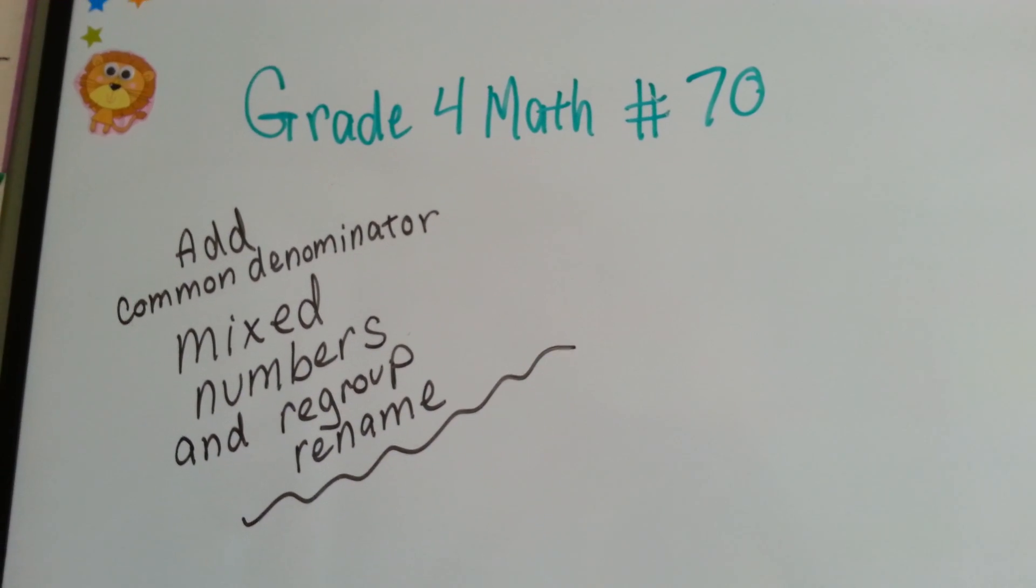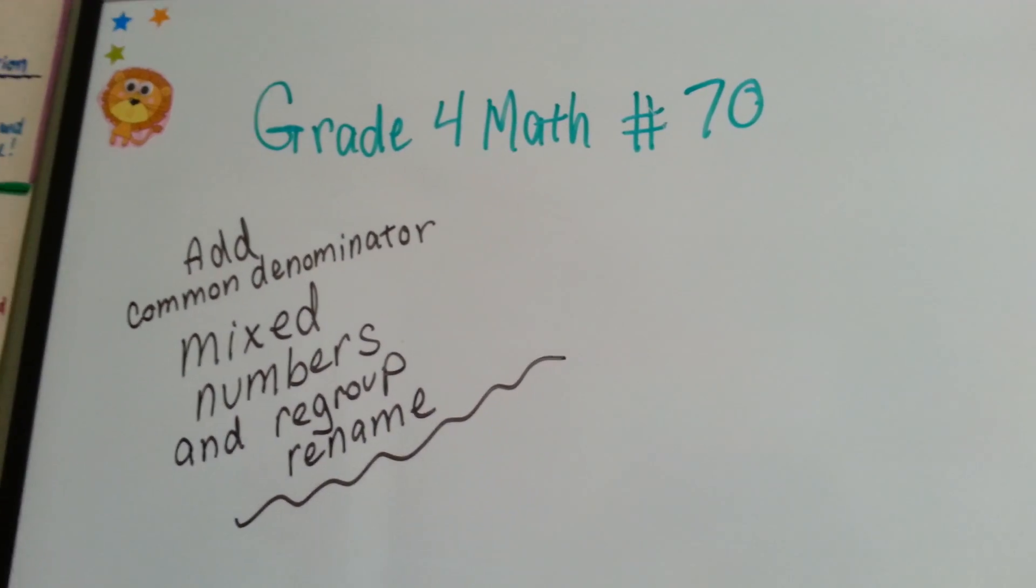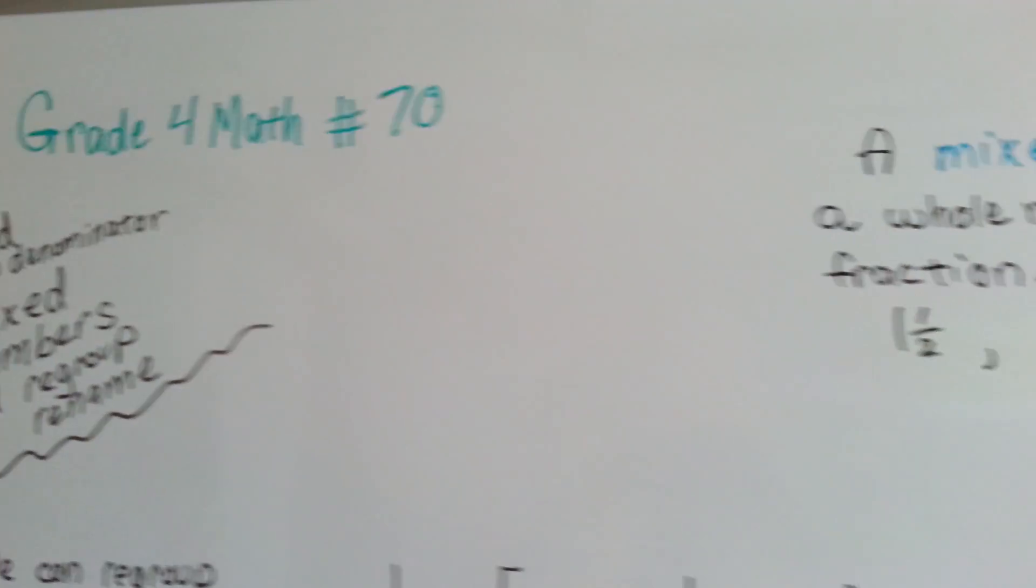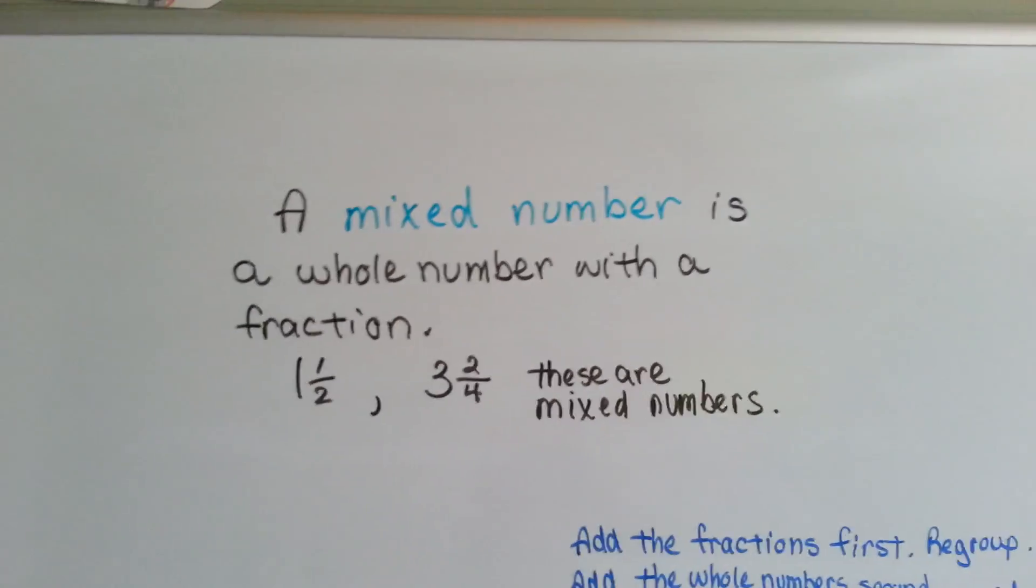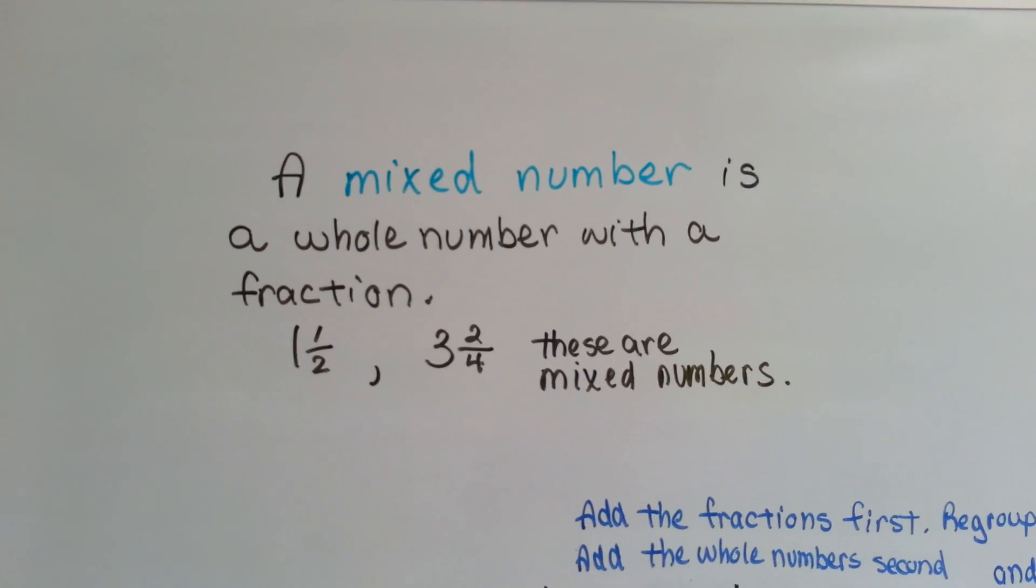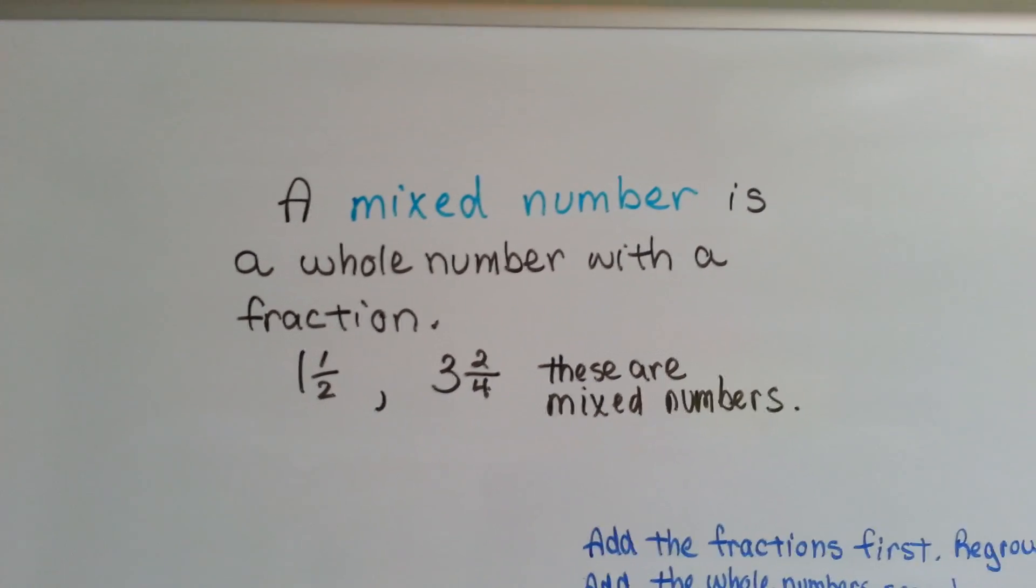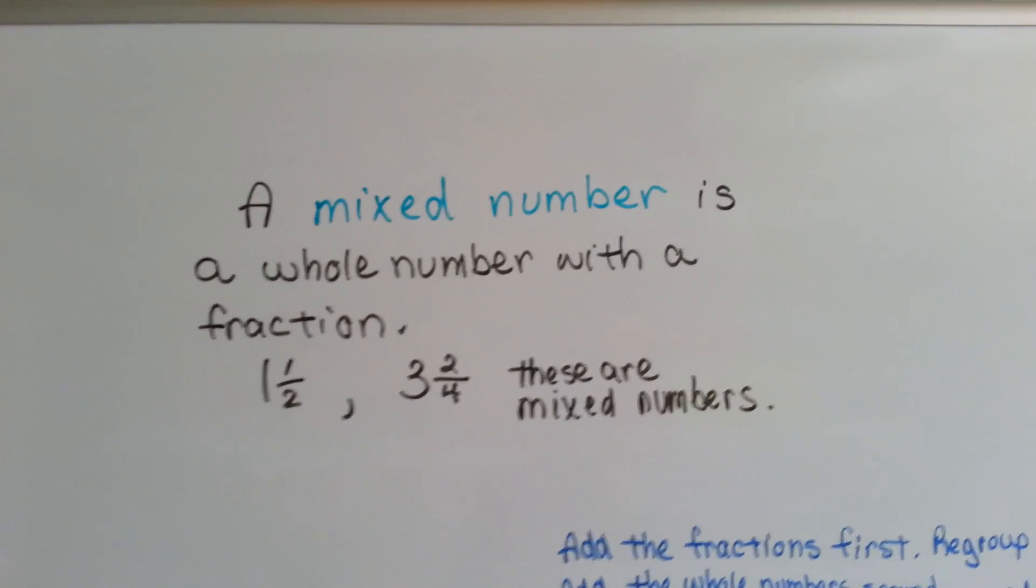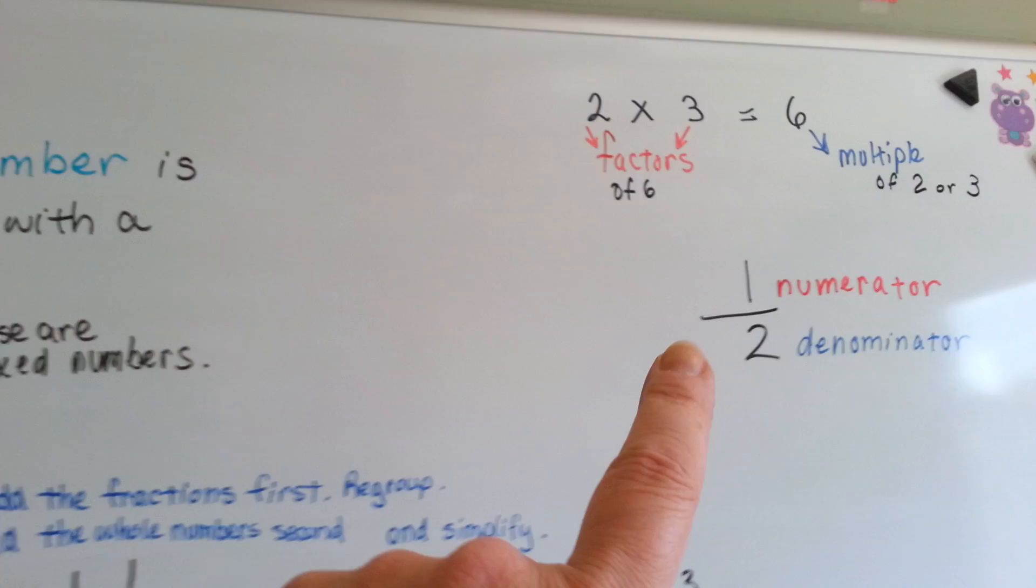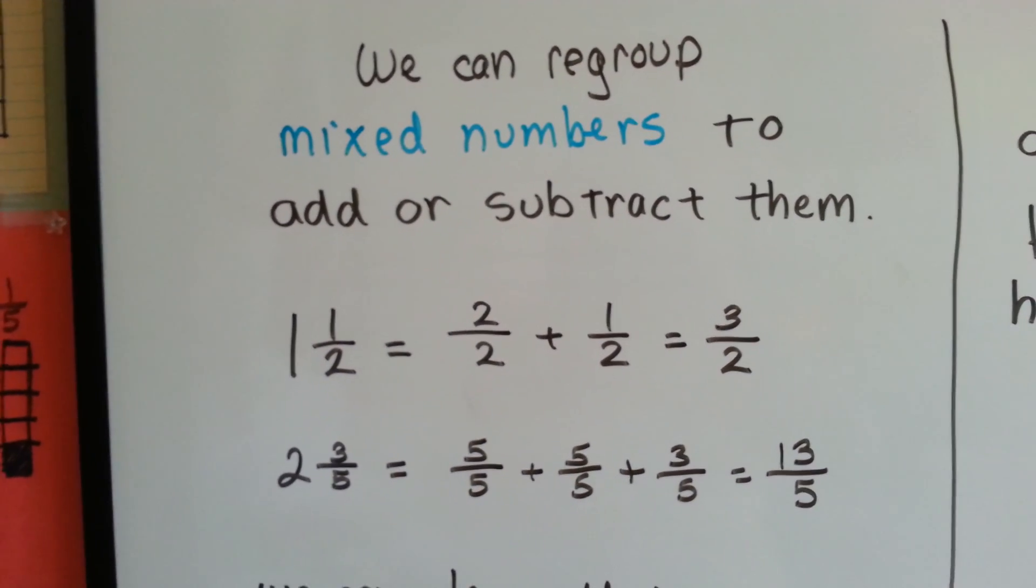Grade 4 math number 70. Add common denominator mixed numbers and regroup or rename them. We've been talking about mixed numbers. Remember, it's a whole number with a fraction, like 1½ or 3 and 2/4. It's a whole number that has a fraction with it, and it's a mixed number. Remember, the numerator is the top, the denominator is the bottom, and we're going to talk about adding mixed numbers that have the same denominator.